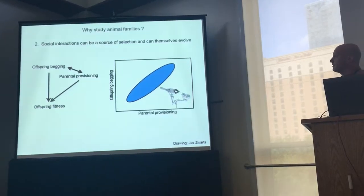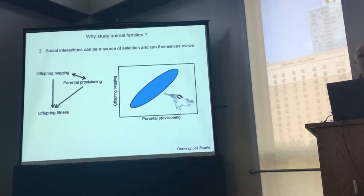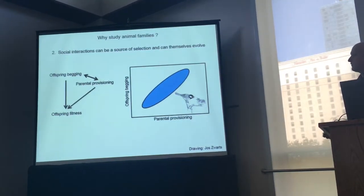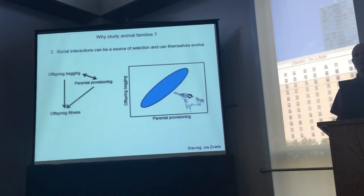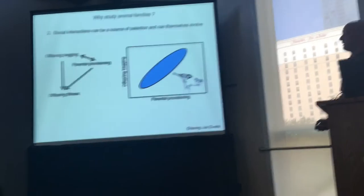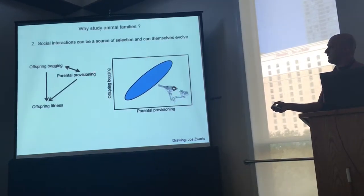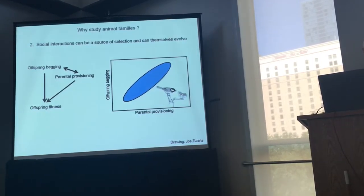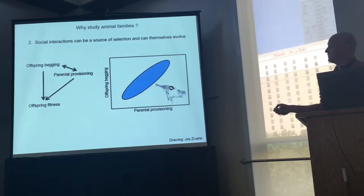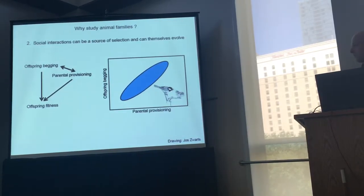The second reason why we're interested in these social interactions is that they can be a source of selection, and they can also themselves evolve. One way to see this is to consider a really simple model of parent-offspring co-adaptation, which I'm showing you right here. In this simple model, we can imagine that the fitness of offspring is determined by two traits: one trait expressed in the offspring, such as the begging behavior, and another expressed in the parent, such as parental provisioning behavior. Selection on offspring can result in changes in traits expressed in offspring as well as traits expressed in parents, and ultimately this can result in the establishment of a genetic correlation between the two — a correlation between offspring begging and parental provisioning behavior due to correlational selection on those traits.